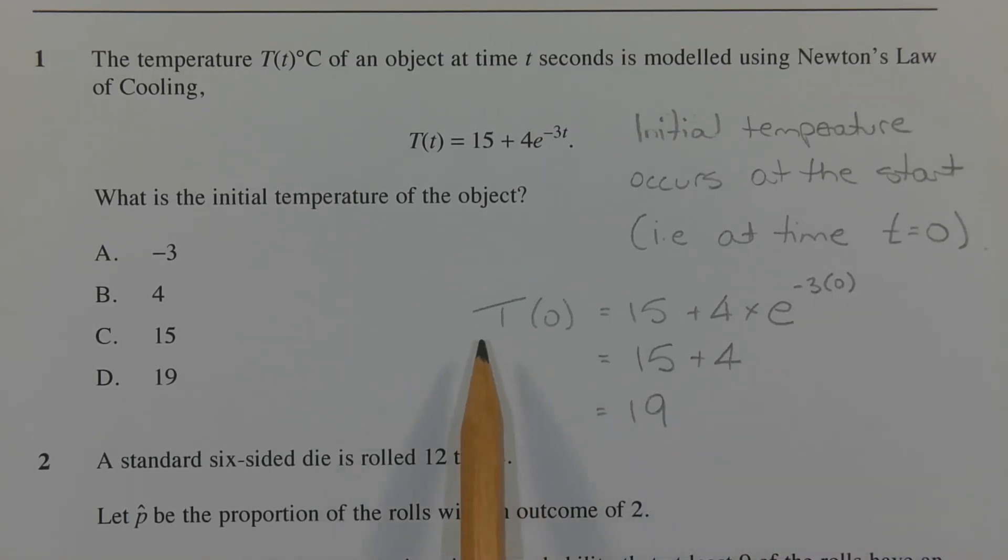So T(0) is equal to 15 plus 4, which equals 19. Therefore, the correct answer is option D.